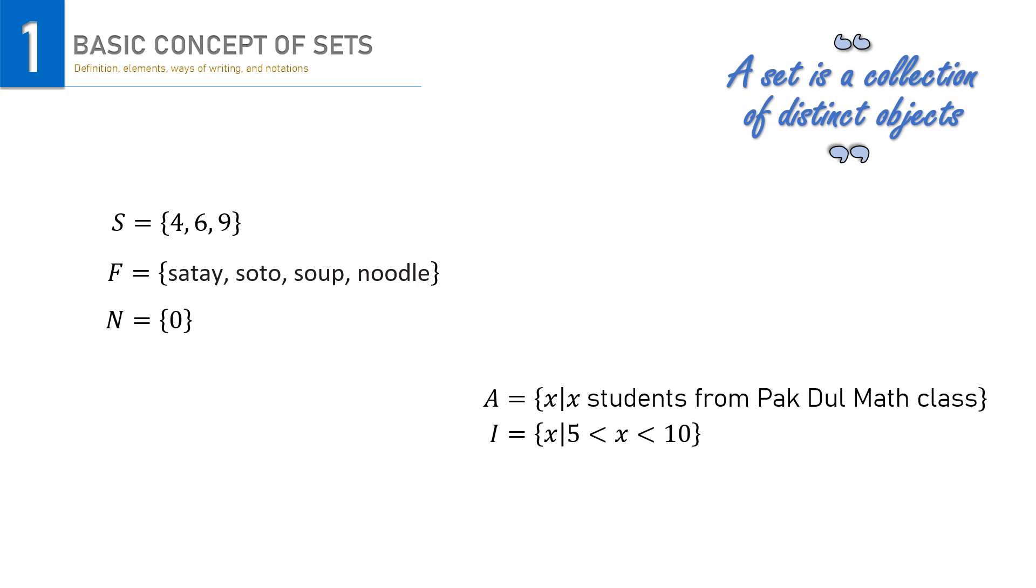Each of the mentioned sets has at least one element. In set S, 4, 6, and 9 are the elements. Then we have these foods as set F elements, 0 as the only element in set N, all Pak Dul's students as elements in set A, and numbers between 5 and 10 as elements in our last set.